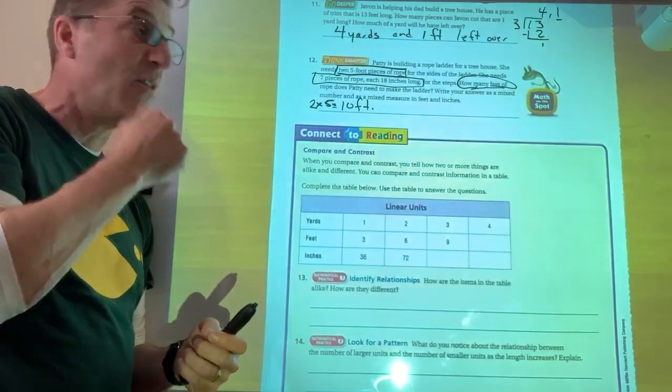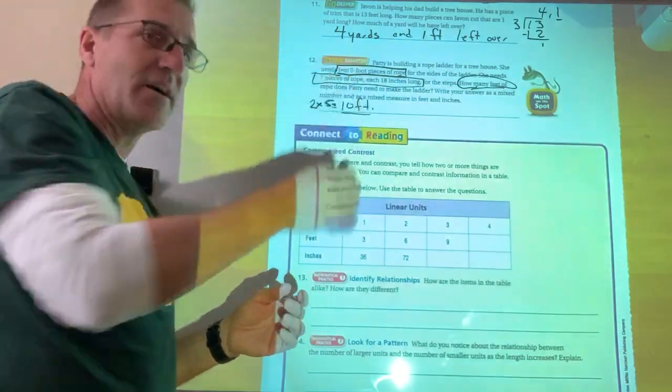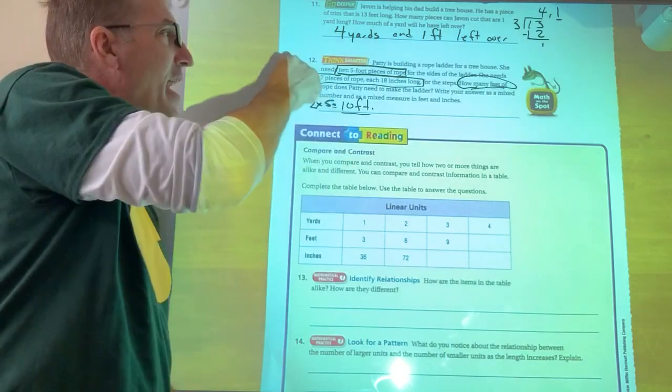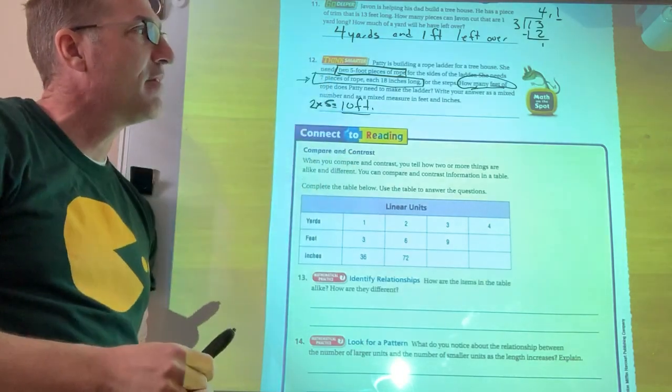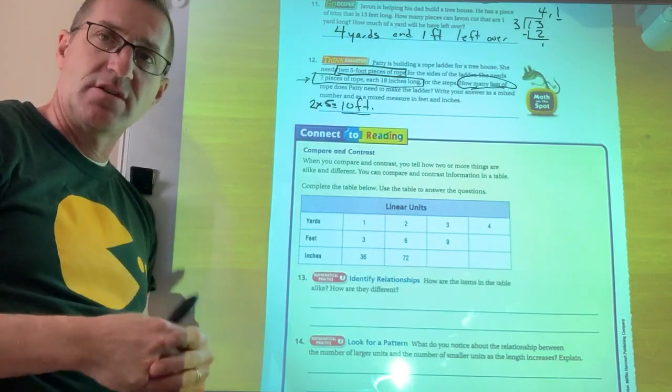Now what am I going to do with this other part though? I got 10 feet to start with. I'm going to add now. So I just took those two long pieces from the sides. Now I got to add up all the little steps. Alright. So I've got seven pieces that are 18 inches long each. So what do I do?